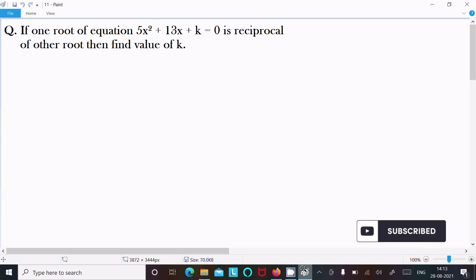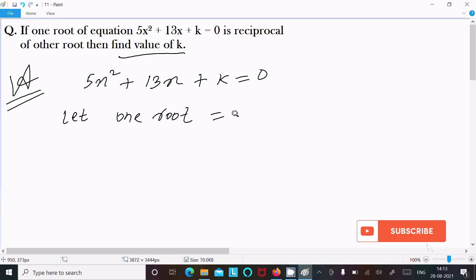In this video lecture, I'm going to discuss how to find the value of k. The given is: if one root of the equation 5x² + 13x + k = 0 is reciprocal to the other root. Let's see the answer. First, we are writing the equation 5x² + 13x + k = 0. Let one root equal z, so another root is reciprocal, which means 1/z.